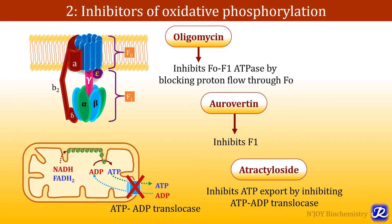Atractyloside inhibits ATP export by inhibiting ATP-ADP translocase. So oligomycin, aurovertin, and atractyloside are the inhibitors of oxidative phosphorylation.